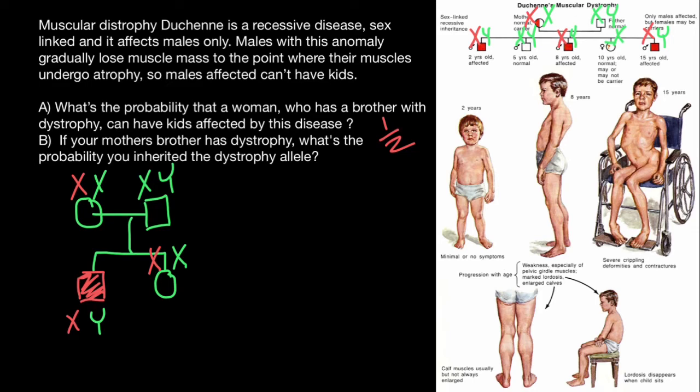In this type of question, we are not thinking about the probability for this woman to have a boy and that boy to be affected. The question is about this woman only — about this proband.